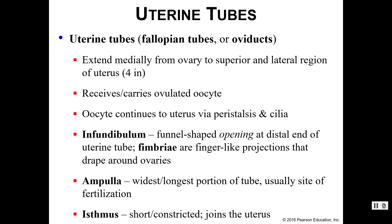If you are an egg, you would leave the ovaries and enter into the uterine tubes. A lot of people call these the fallopian tubes; some people refer to them as the oviducts — it's all the same thing. They extend from the ovary to the superior and lateral regions of the uterus, which sounds like a long way but is actually only about four inches. The uterine tubes receive the oocyte that has been ovulated, and the oocyte continues to the uterus via peristalsis as well as cilia, which beat and create waves to push the oocyte along.